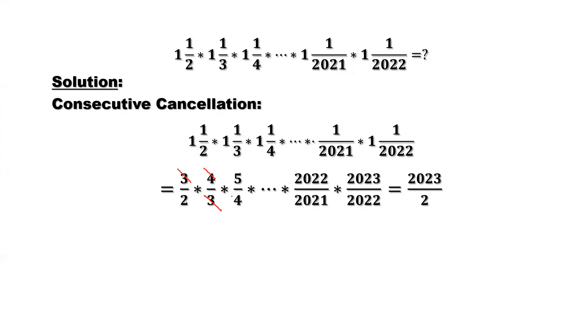And 4 here, and 4 here, and 5 here, and 5 here. Right? Then you have 2021 here, 2021. Then you have this, 2022, 2022. What is left in the numerator? That's 2023. That's here, 2023. What is left in the denominator? Only 2 here. Divide by 2.